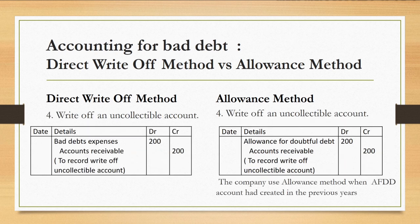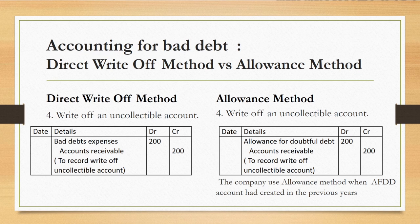Under the direct write-off method, to record a write-off of an uncollectible account, debit bad debts expense and credit account receivable. But under the allowance method, when you want to write off an uncollectible account, debit allowance for doubtful debts and credit account receivable. This situation applies when the company uses the allowance method and the allowance for doubtful debts account had already been created in the previous year.